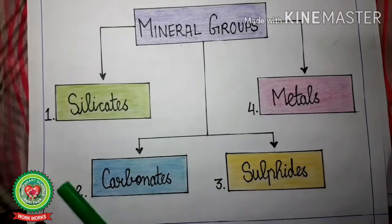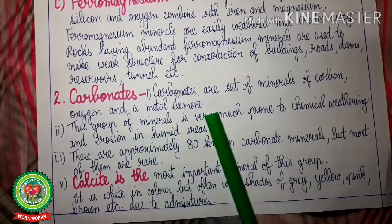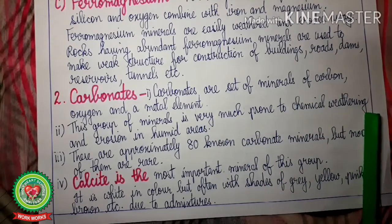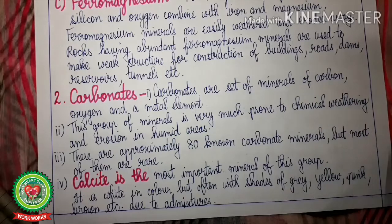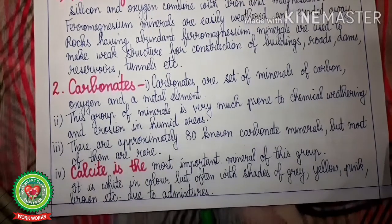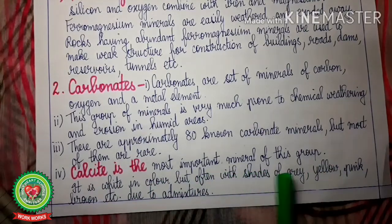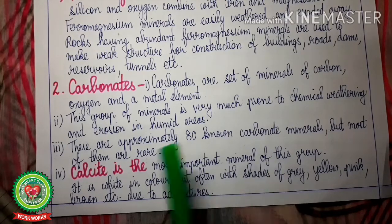The second mineral group is carbonates. Carbonates are a set of minerals of carbon, oxygen and a metal element. This group of minerals is very much prone to chemical weathering — that is, weathering caused by rain water and erosion in humid areas. Humid areas are areas with more rainfall or more humidity, like coastal areas. There are approximately 80 known carbonate minerals but most of them are very rare. Calcite is the most important mineral of this group. It is white in colour but often comes in shades of grey, yellow, pink and brown due to admixture — meaning when it mixes with other elements.